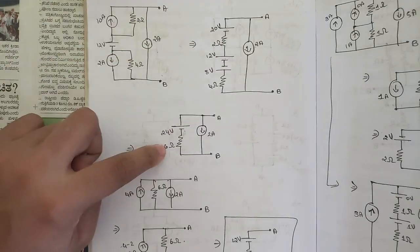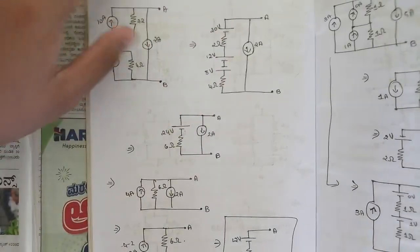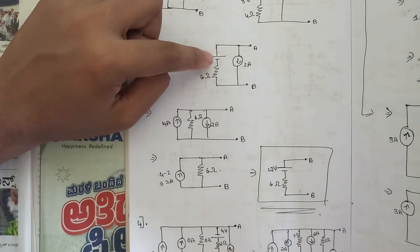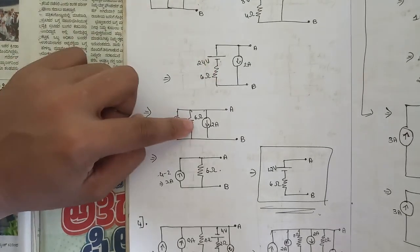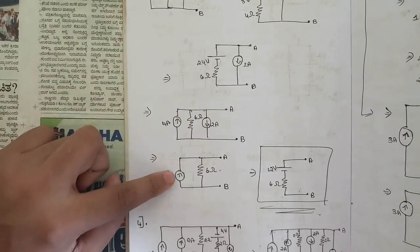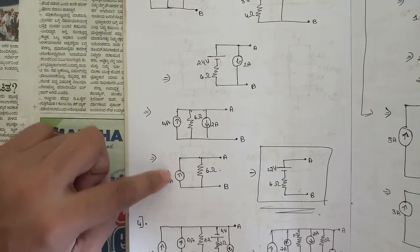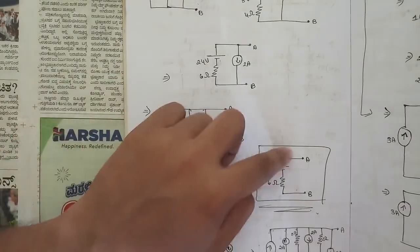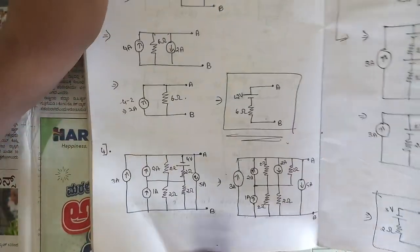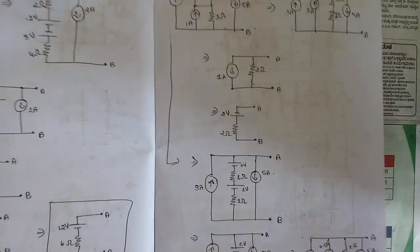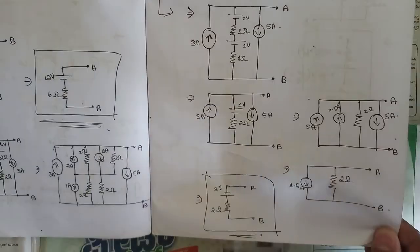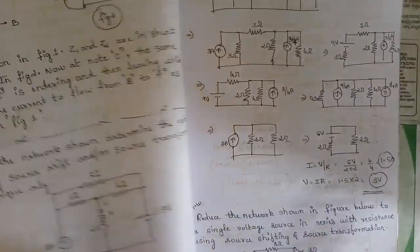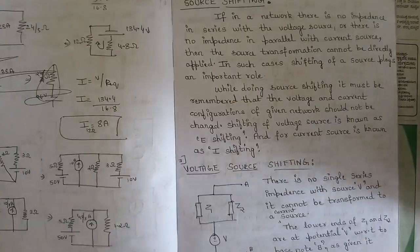The two resistances are in series, so we add them: 2 ohm plus 4 ohm gives 6 ohms. Then we convert the voltage source in series to a current source in parallel, add the two current sources to make a single current source, and finally convert back to a voltage source in series. This is a complex circuit — pause the video and go through it.